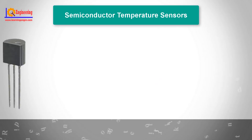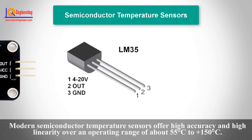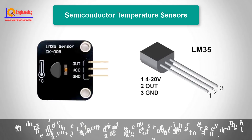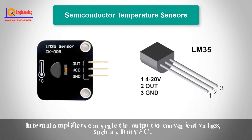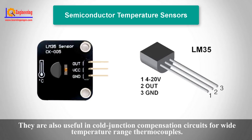Semiconductor sensors are classified into different types including voltage output, current output, digital output, resistance output, silicon, and diode temperature sensors. Modern semiconductor temperature sensors offer high accuracy and high linearity over an operating range of about -55°C to 150°C. Internal amplifiers can scale the output to convenient values, such as 10 mV per degree centigrade. They are also useful in cold junction compensation circuits for wide temperature range thermocouples.